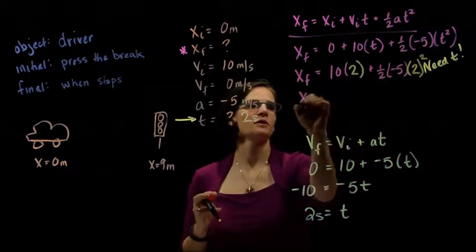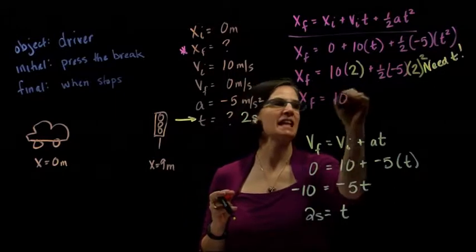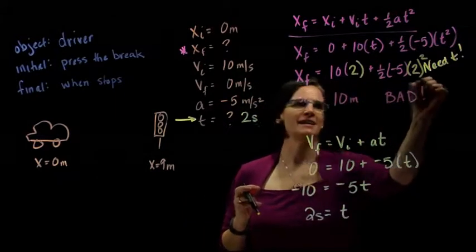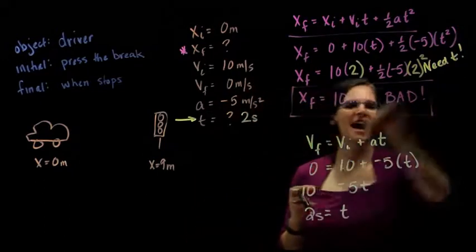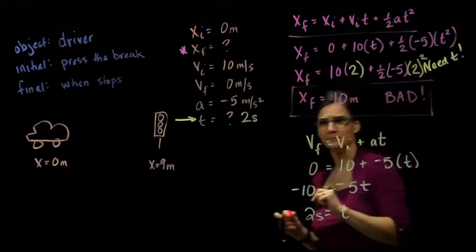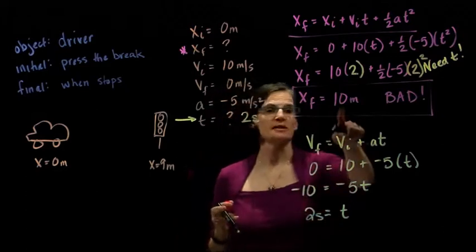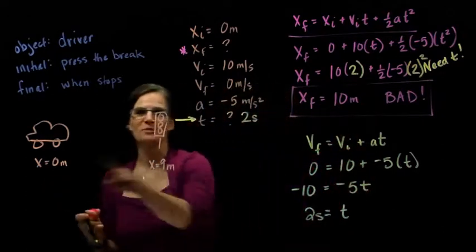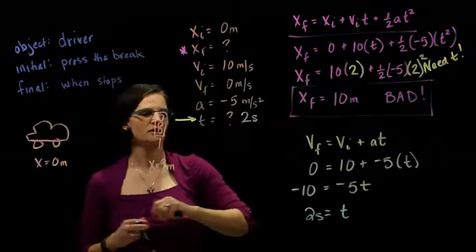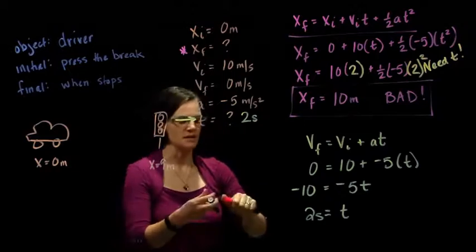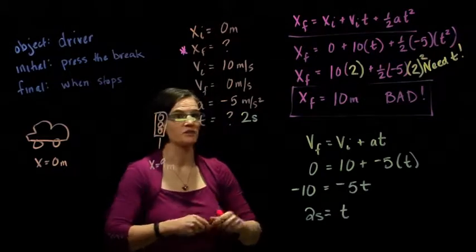Solving for x final, we find that it equals 10 meters, which of course is bad. He is going to go past that intersection. So, just to do that quick evaluation, 10 meters is a positive value. He was moving to the right, he should end up at a positive value. We're going to compare that 10 to where our stop light, our cross traffic is, and we see that he exceeds the cross traffic.